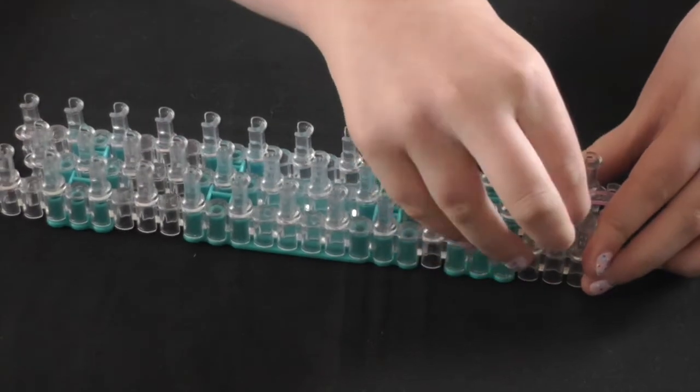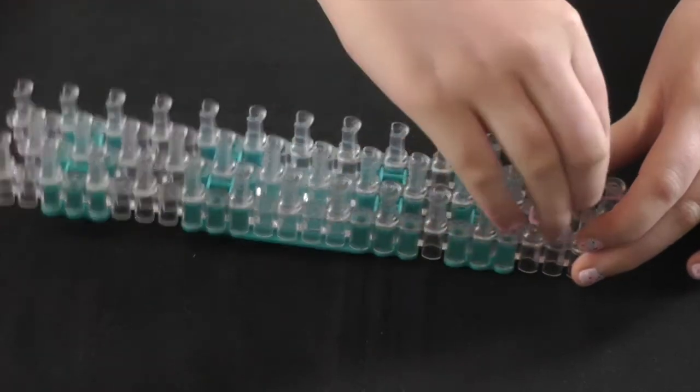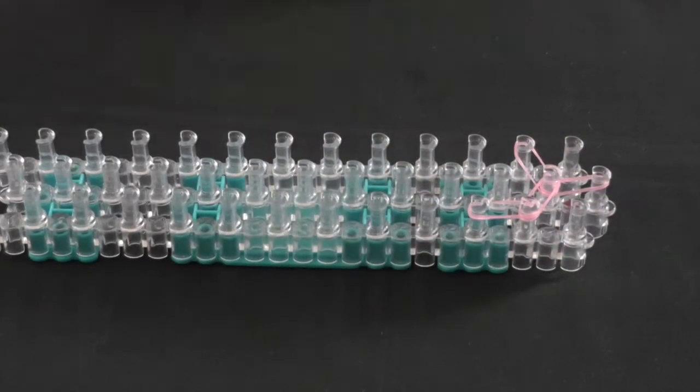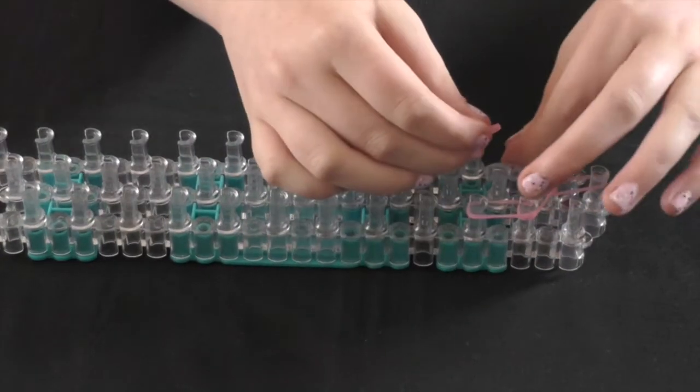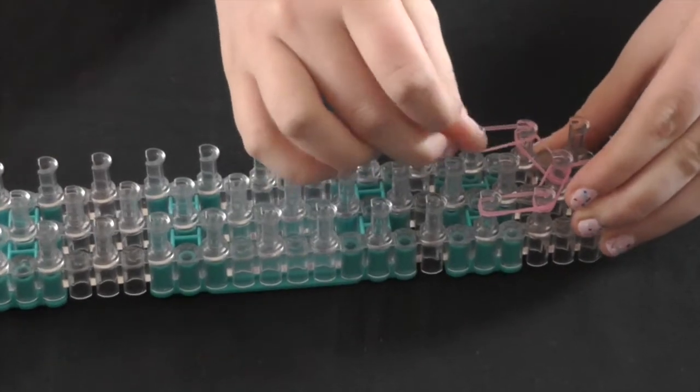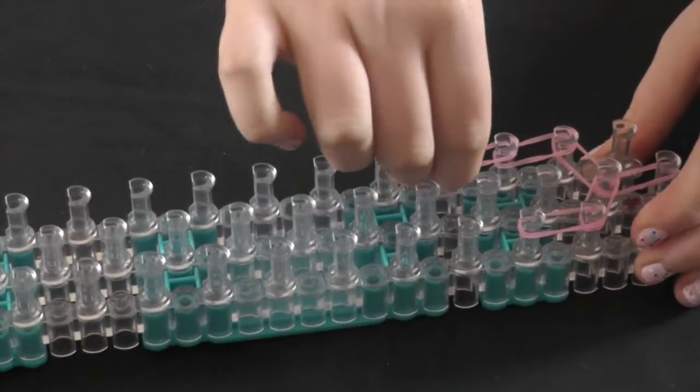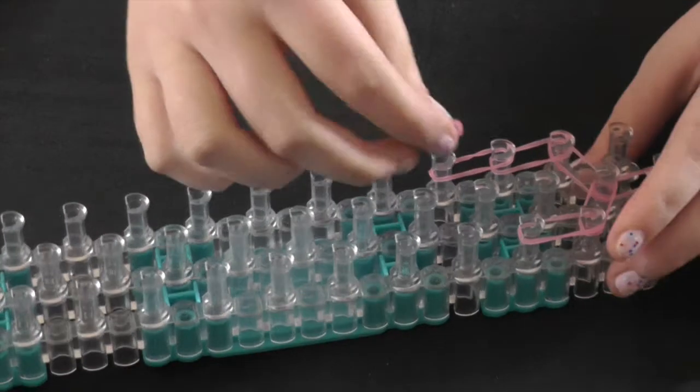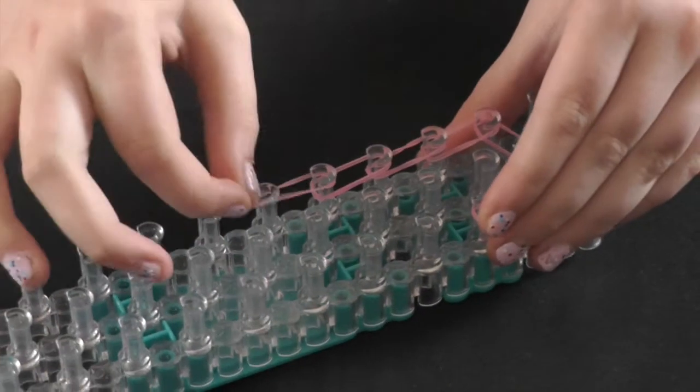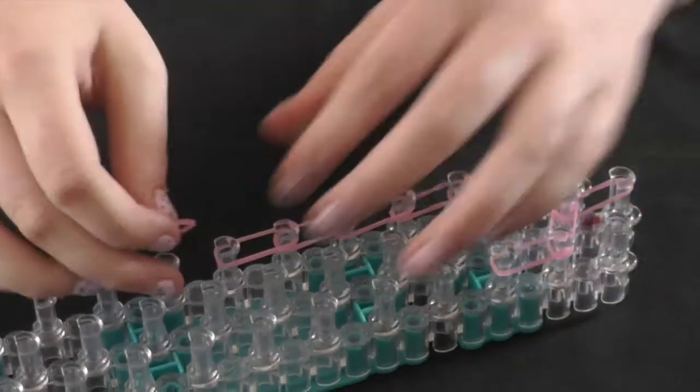Then you get a band going from here to here and here to here. We then carry on. By the way, this is all single bands in this pattern, so there aren't any doubles. Well, there kind of are, but not only doubles in this bit, which should hopefully make it easier. Do you see what I'm doing? You keep laying the bands out, going down the loom, just like you're making a really basic bracelet.